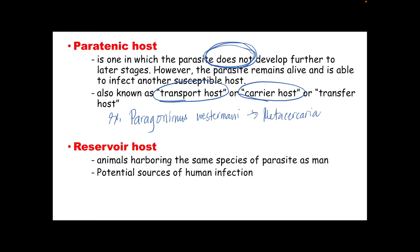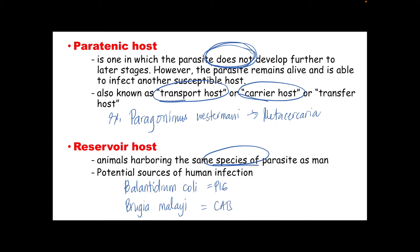Next, we have the reservoir host. This is an organism harboring the same species of parasite as man, and they are potential sources of human infections. For example, in Balantidium coli, the reservoir host is a pig. In Brugia malayi, the reservoir hosts are cats. In Paragonimus westermani, rats are considered as reservoir hosts. Again, the paratenic host in Paragonimus westermani is the wild boar.